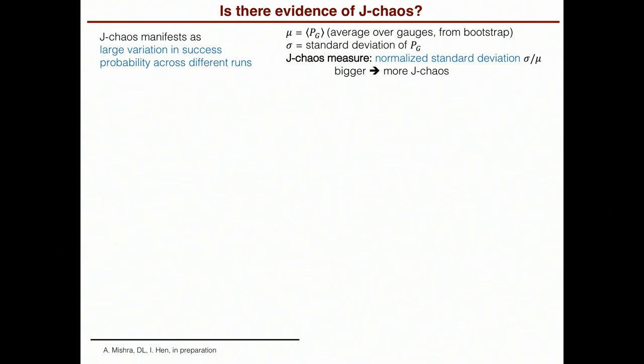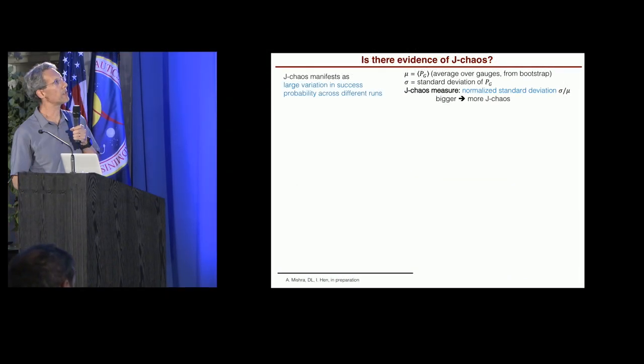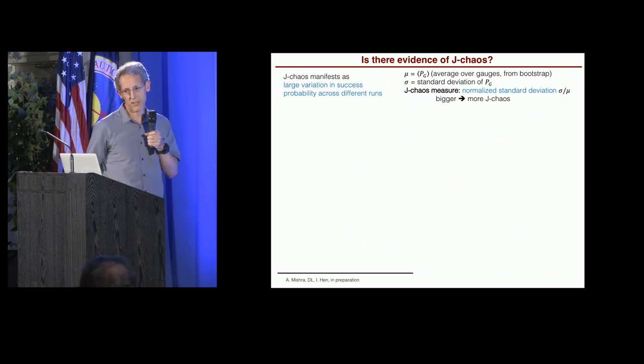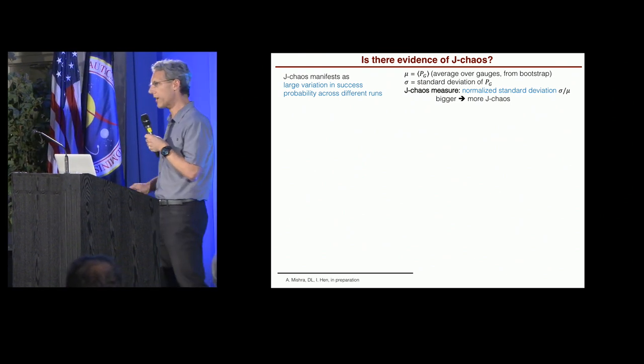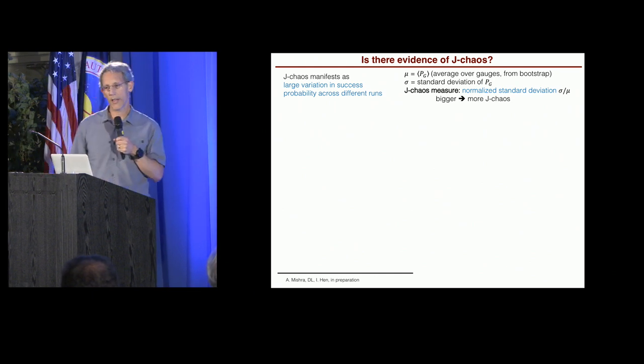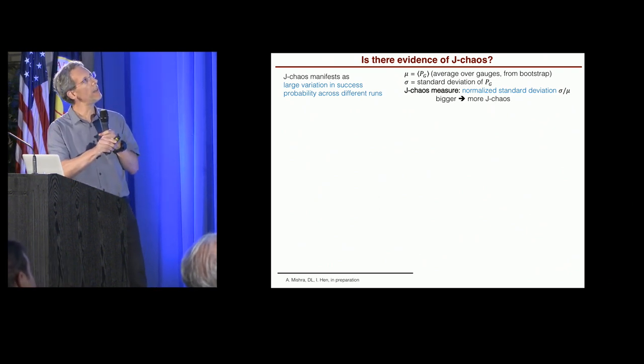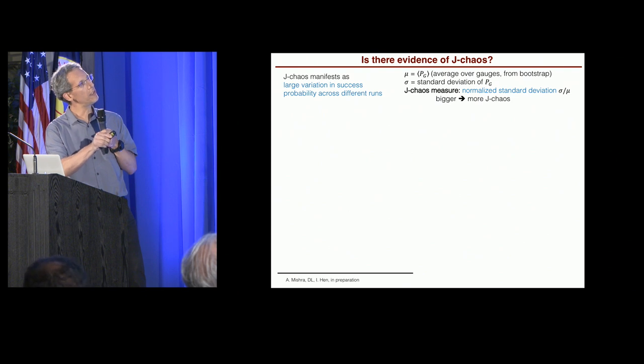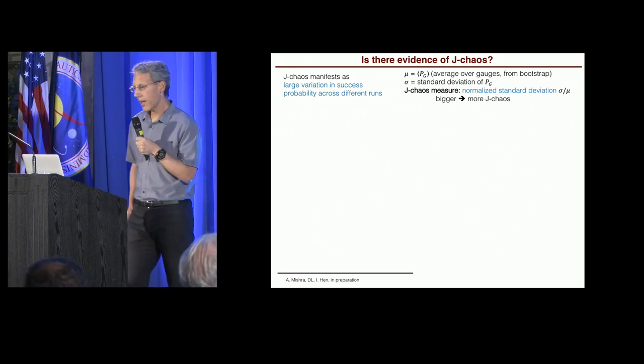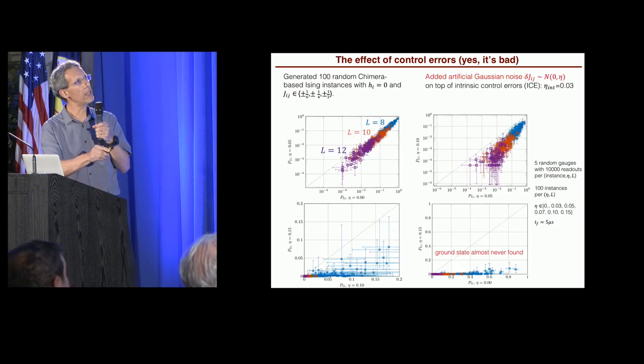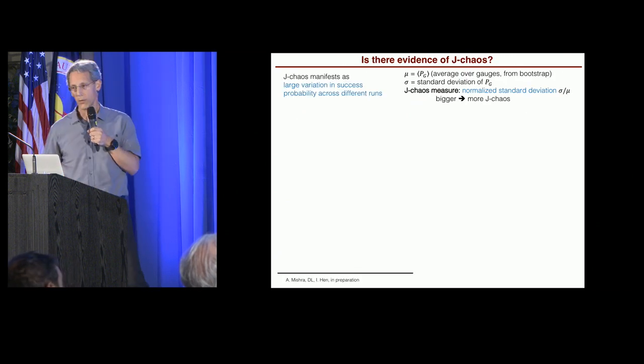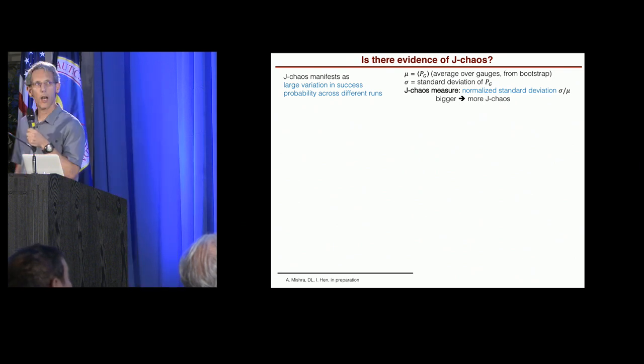Now, I said that this is due to J-Chaos. So what is J-Chaos? Is there evidence of J-Chaos? I'm not going to get into the theory of J-Chaos. And I will use an extremely simple-minded measure to quantify the existence of J-Chaos. J-Chaos is essentially associated with the existence of large variations in the success probability across different runs. So to quantify this variation, let's compute the average ground state probability. Let's compute the standard deviation of these ground state success probabilities. And our J-Chaos measure is simply the normalized standard deviation, sigma over mu.